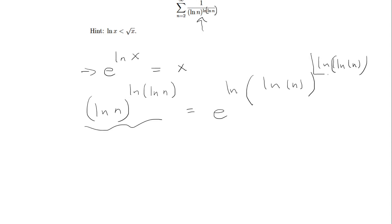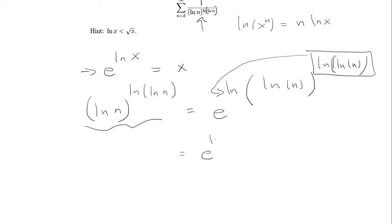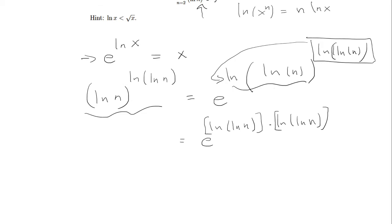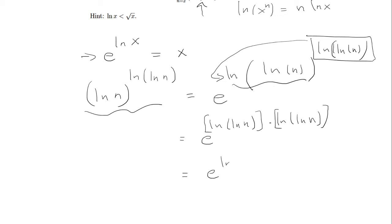Now this exponent will come out in front, because if I have ln of x to the n, that's just n times ln of x. So this becomes e to the ln of ln of n times ln of ln of n, which is e to the ln of ln of n, whole thing squared.